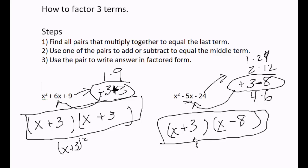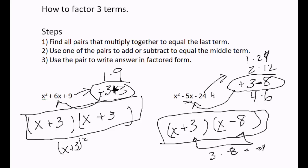I would just check it to verify the last term is correct. A positive three times a negative eight equals negative twenty-four, and our last term is negative twenty-four, so this confirms our pair. That gives us one more problem to try.